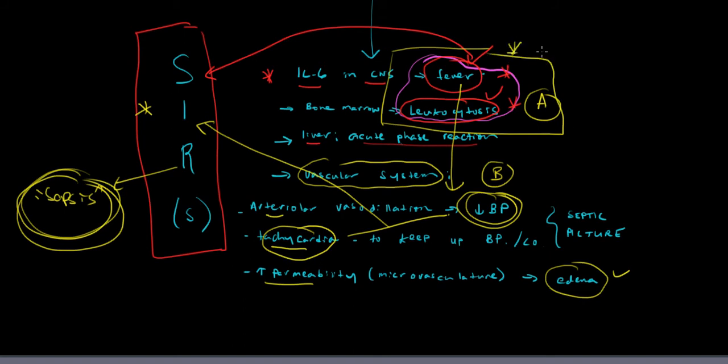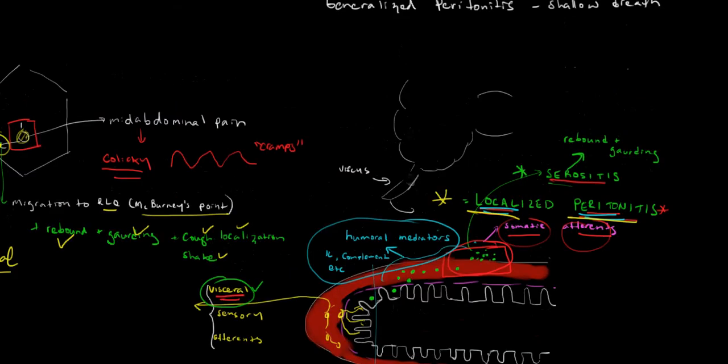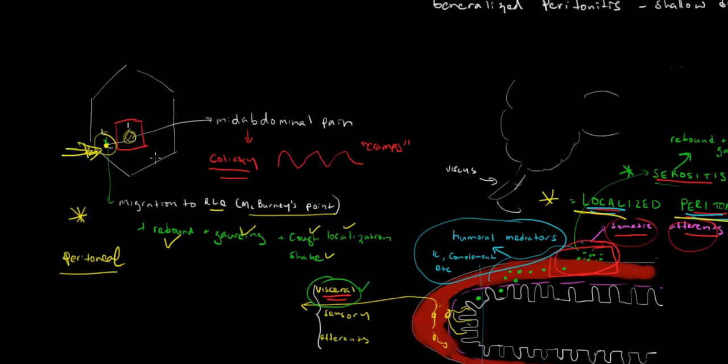So that shows you the clinical presentation of appendicitis. It starts off with mid-abdominal colicky pain - that's the pain of a viscous. It goes to localized right lower quadrant abdominal pain that's sharp and that has rebound and guarding - that's somatic pain. Then you get fever and a white count.